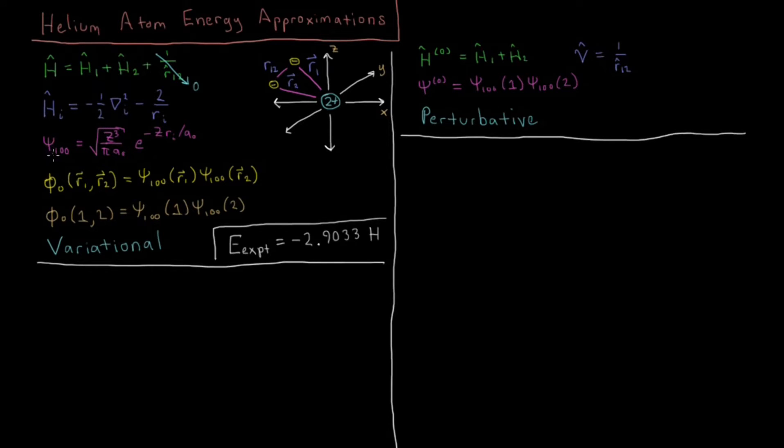Okay, so that 1s orbital is just a normalization constant times a decaying exponential, decaying away from the nucleus. And what we're going to do for this variational procedure here is something kind of strange. This z represents the charge of the nucleus, which is 2 here, but we're going to treat this z as a variational parameter.